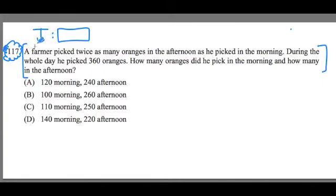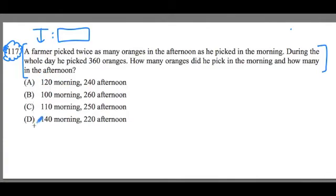A farmer picked twice as many oranges in the afternoon as he picked in the morning. During the whole day he picked 360 oranges. How many oranges did he pick in the morning and how many did he pick in the afternoon? And then we have these values here, and only one of them is correct.